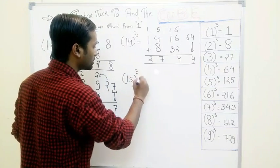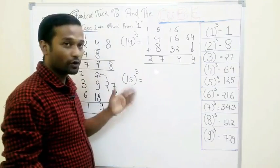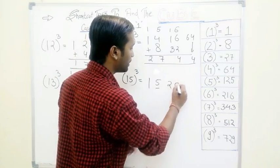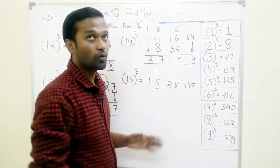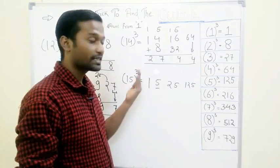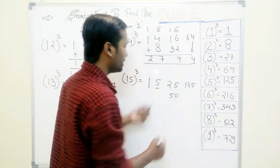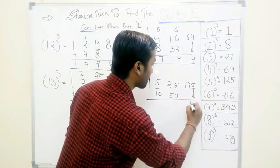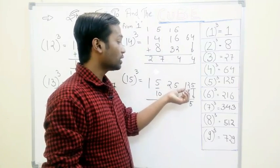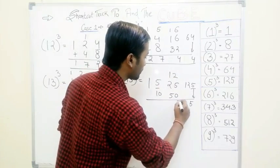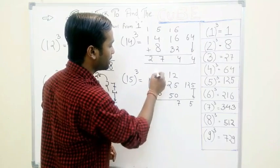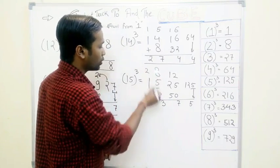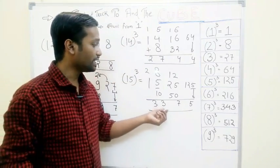Take another example: 15 cubed. Same pattern. Write these two numbers from the left: 1, 5. Square this number — that is 25 — and cube this number — that is 125. Leave the extreme right and extreme left and double: 25 doubled is 50, 5 doubled is 10. Write only the unit digit — that is 5 — and 12 as a carry. Don't take 120 as a carry, just 12. Adding: 5, 12 gives 7, carry 1; 13 plus 10 is 23, carry 2; answer is 3375.